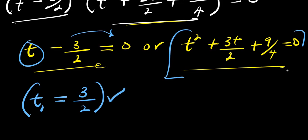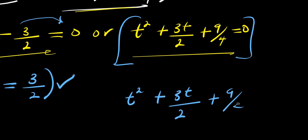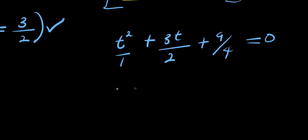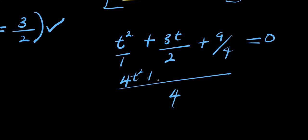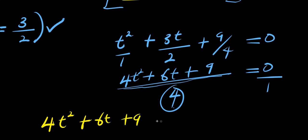Now we solve the quadratic t squared plus 3t over 2 plus 9 over 4 equals 0. Finding the common LCM of 4: multiplying through gives 4t squared plus 6t plus 9 equals 0.